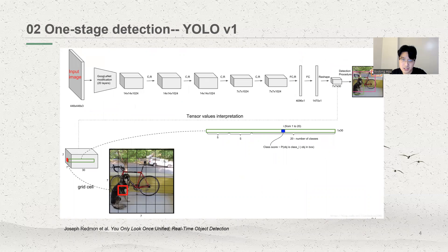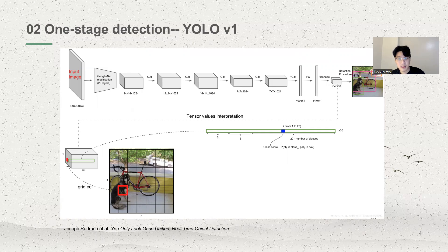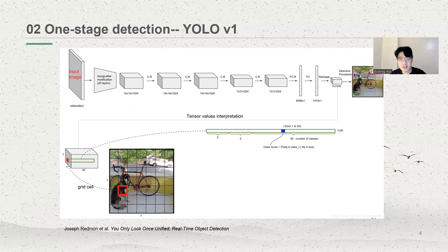The task of object detection is to get the classification and the coordinates of an object. One-stage detection uses a single CNN network to extract features and perform regression. The input image goes through a convolutional neural network to achieve feature extraction and get a feature map. The fully connected layer is used to process the feature map to obtain the bounding box parameters and the position of the object in each grid cell. The YOLO version one algorithm has limitations because the size of the input image is fixed, due to the constraints of the fully connected layers.